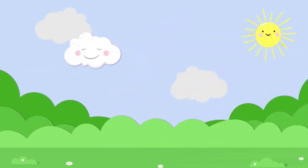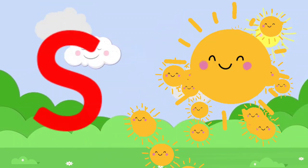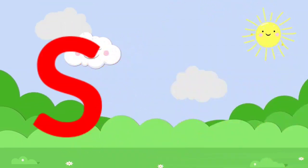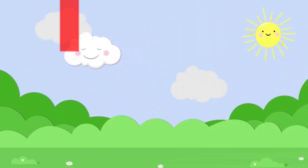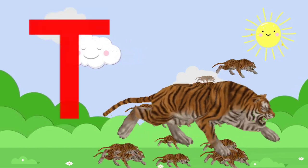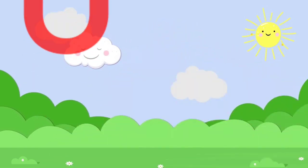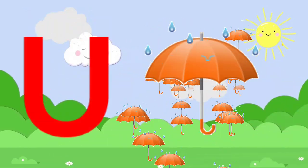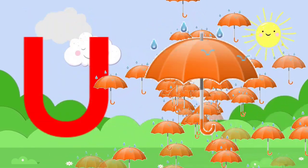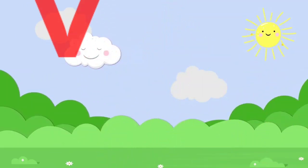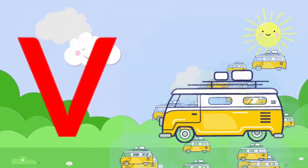S for Sun. T for Tiger. U for Umbrella. V for Van.